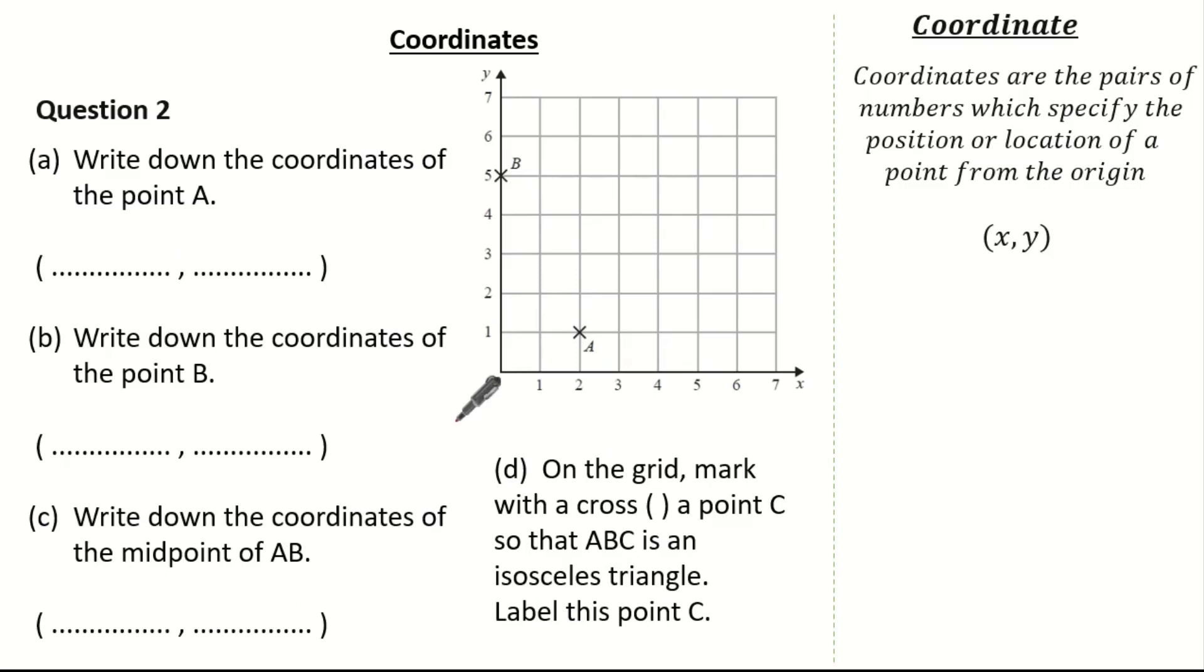Looking at another exam question it wants us to write the coordinates of point a, write the coordinates of point b, write the coordinates of the midpoint of ab, and then identify with a cross point c so that abc is an isosceles triangle. See if you can give it a go and press pause if you need.